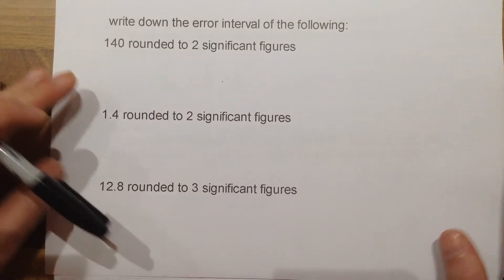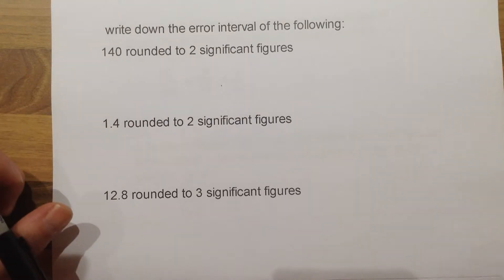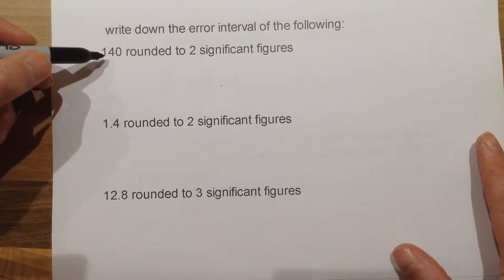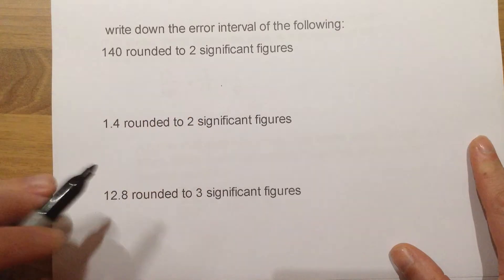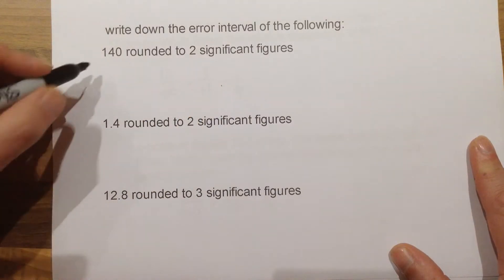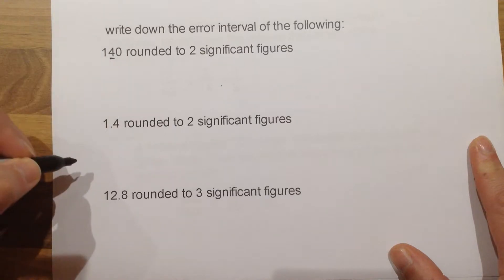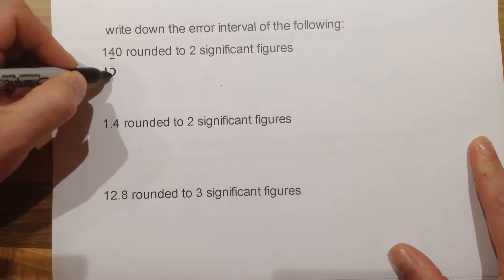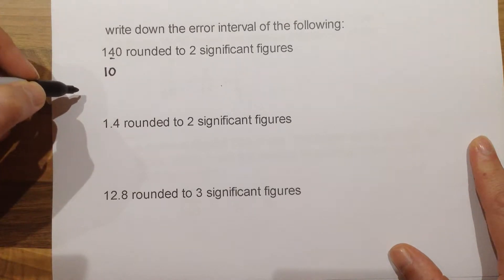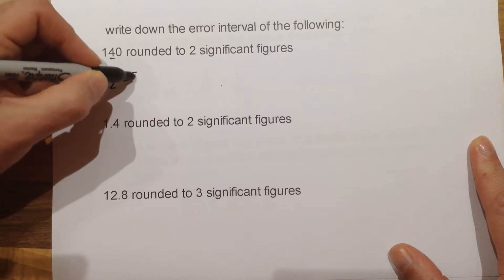The next topic is asking for error interval. Now, the error interval is all to do with the upper and lower bound of a number. So here, the first thing we would need to do is look and think two significant figures. So whatever number we started with has been rounded, in this case, to the nearest 10. If I've rounded to the nearest 10, a little trick that we can use is half whatever we've rounded to. So in this case, 5.